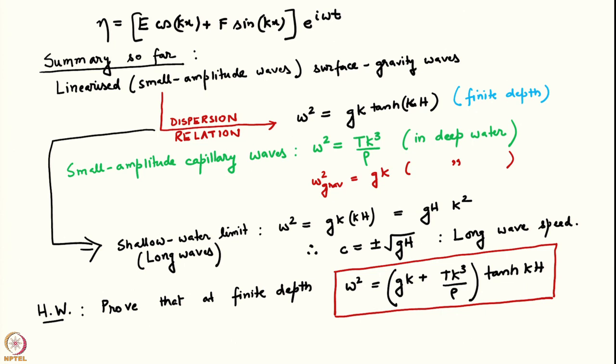The combination of capillary and gravity waves is governed by omega squared equals g k plus T k cubed by rho. We have also seen the shallow water limit, where the wavelength is much longer than the depth. For such waves, as the wave gets longer and longer the effect of gravity dominates over surface tension. In that limit, omega squared equals g k tanh(kh) reduces to omega squared equals k squared times g h, which leads to a phase speed independent of wave number k. All long waves travel at the same speed, given by square root of g h.